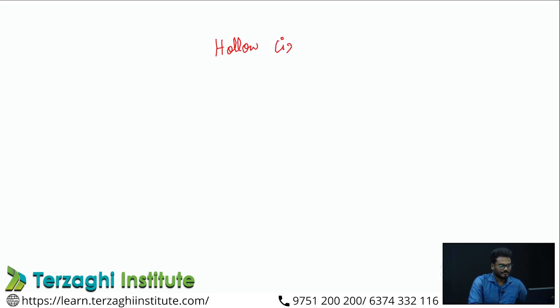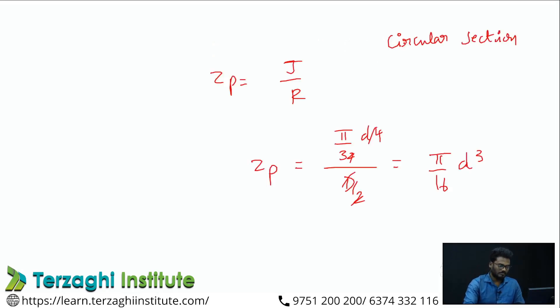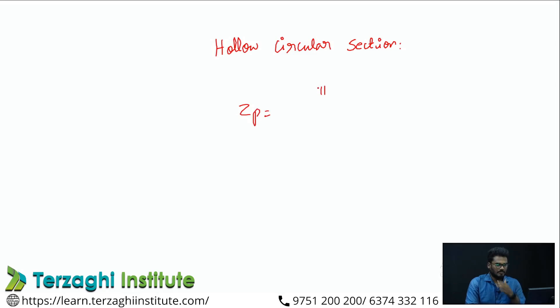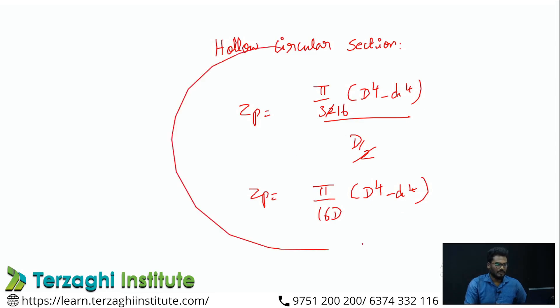For a hollow circular section: Zp = (π/32)(D⁴ - d⁴) / (D/2), which simplifies to (π/16D)(D⁴ - d⁴). This gives the polar modulus for both solid circular and hollow circular sections.